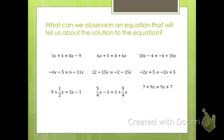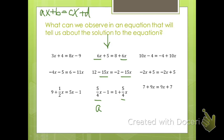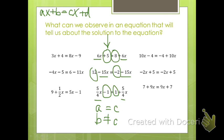Let's look at these and see what it was about the coefficients and the constants that made that true. For the no solution column, the coefficient of the x terms was the same in every case — negative 15 and negative 15, or 5/4 and 5/4. So if we're thinking of ax plus b equals cx plus d, then a equals c — the coefficients are the same. But in each case, the constant terms are different: 12 and negative 2, 5 and 8, negative 1 and positive 1. So b does not equal d.